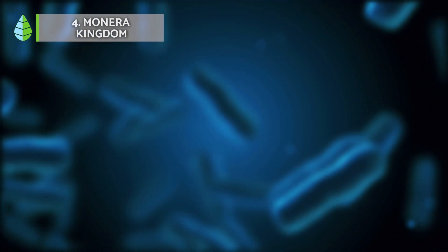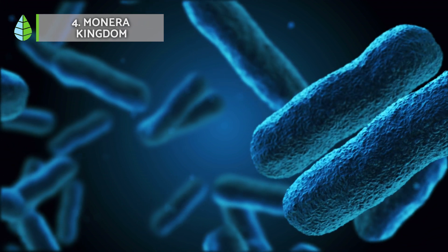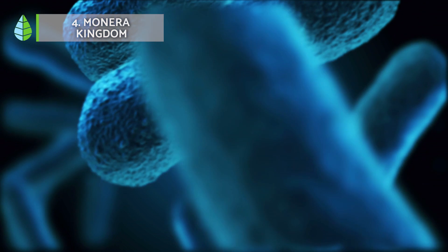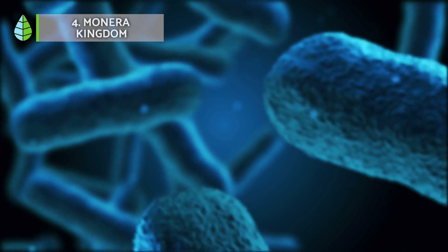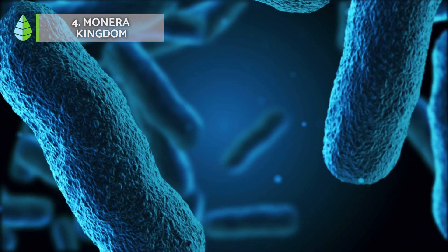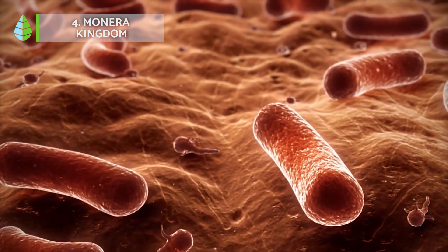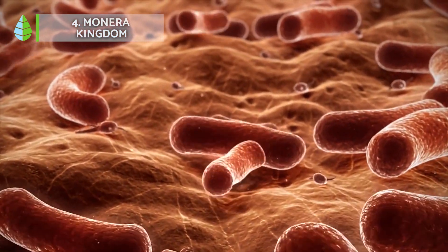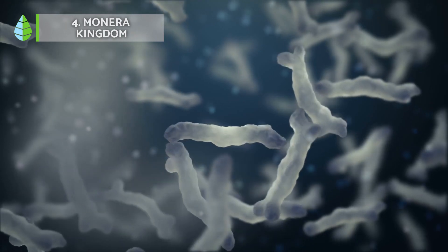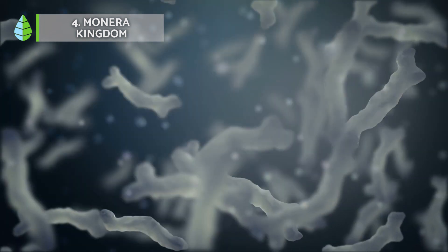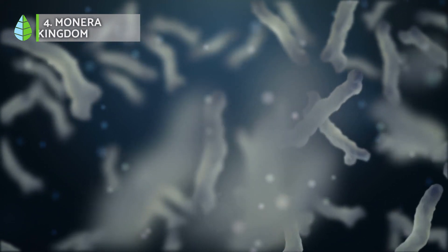4. Monera Kingdom. The Monera Kingdom was introduced by Haeckel in 1866, including unicellular microscopic organisms without a defined nucleus. However, thanks to new identification techniques, it was concluded that some organisms had an independent evolutionary history and were considered two separate groups: archaea and bacteria. Bacteria also include cyanobacteria. They come in different forms such as cocci, bacilli, vibrios or spirilla. They lack organelles in their cells and reproduce asexually. They are notable for their decomposing and mineralising function in their habitat.